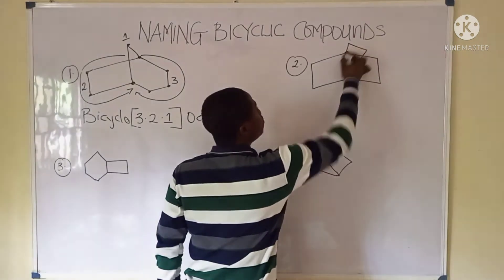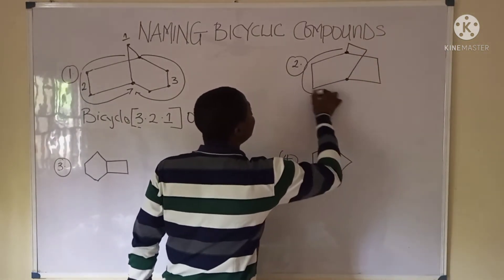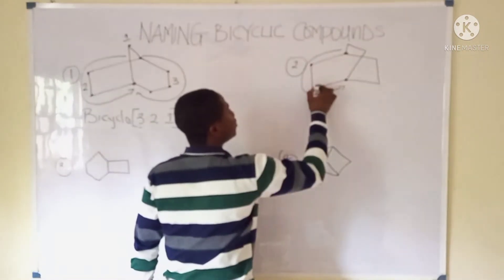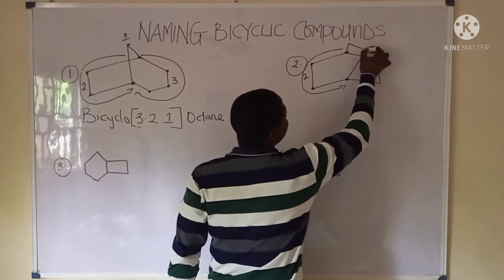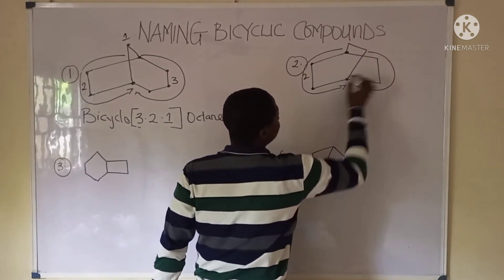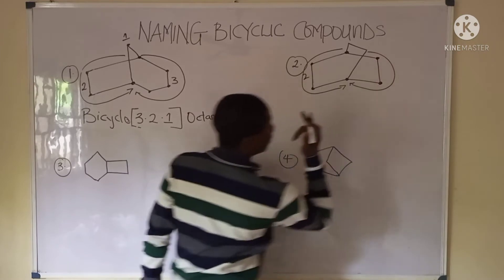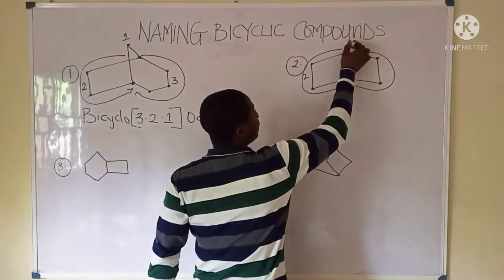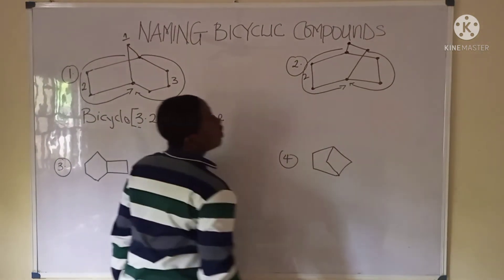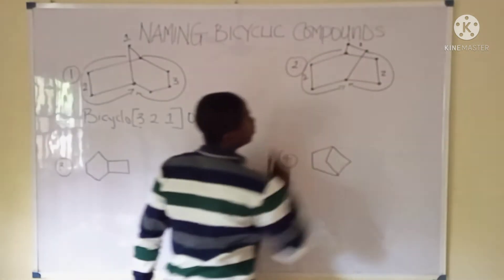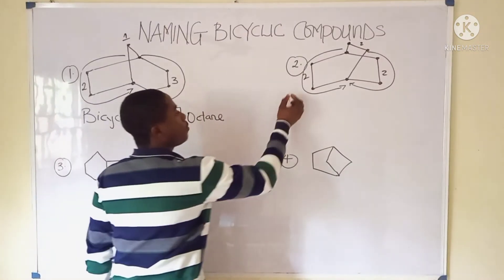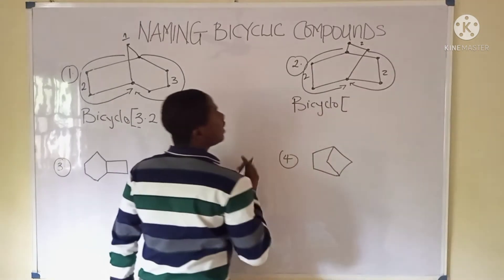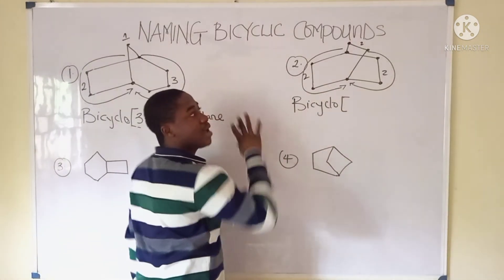Now let's move to the second example. The two bridgehead carbons are identified. Moving from one bridgehead carbon to the other from the left, we have two carbons. Moving from the right bridgehead carbon to the other, we also have two carbons. The bridge between the two bridgehead carbons also contains two carbons.